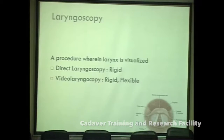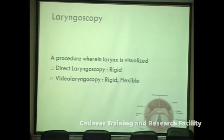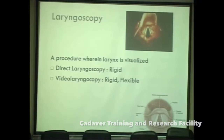Laryngoscopy is a procedure wherein the larynx is visualized. It can be direct laryngoscopy, which we perform normally in our ORs, or video laryngoscopy, which is a form of indirect laryngoscopy. Previously, patients with large thyroids or vocal cord palsy were sent to ENT for indirect laryngoscopy. Now we have video laryngoscopy in the OR, which can be rigid or flexible. This lecture will cover rigid video laryngoscopy; flexible a-scopes will be dealt with later alongside fiber optic intubation.